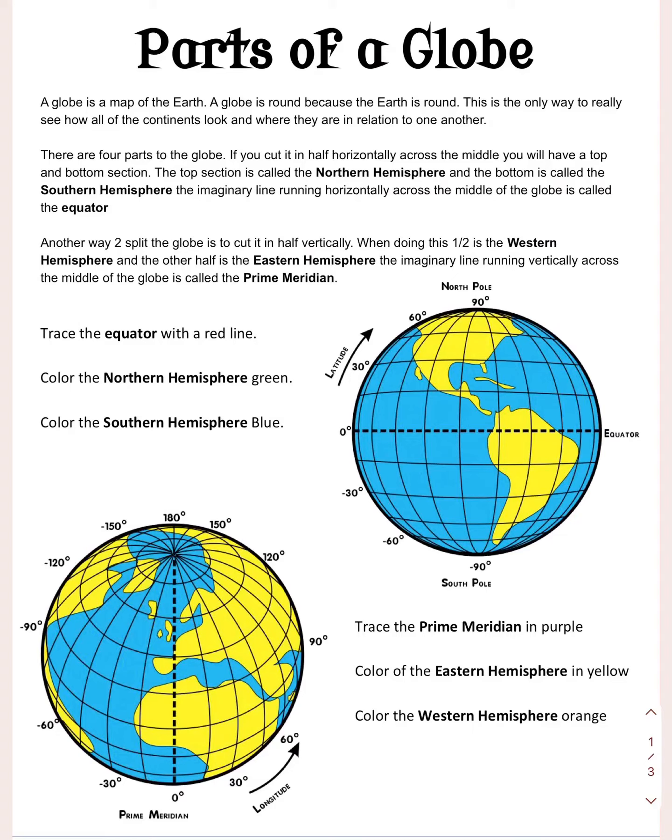In today's work you have two tasks. The first one is to identify and label the parts of a globe. A globe is a map of the earth — globes are round because the earth is round. It's the best way to see how all the continents look and where they are in relation to each other.